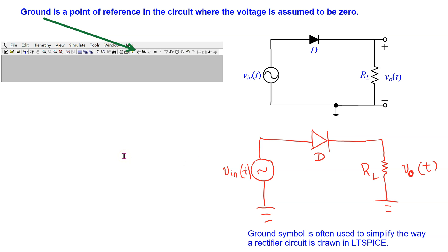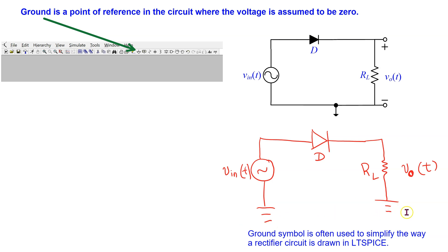LTSPICE is a node voltage method-based simulator, so we must use a ground. Recall that a ground is a point of reference in the circuit where the voltage is assumed to be zero. In LTSPICE, the ground symbol can be accessed by clicking the ground icon. The ground symbol is also used to simplify how the rectifier circuit is drawn. Using two ground symbols tells LTSPICE that those two points are the same node with a zero volt reference voltage.